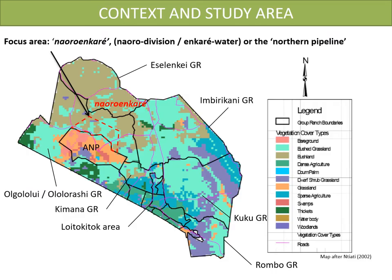The Great Amboseli Ecosystem is a socio-ecosystem located in a semi-arid zone in the south of Kenya. The region experiences bimodal rainfall varying between 250 and 500 mm per year. Precipitation is a key climatic component governing vegetation growth and production, and the abundance, biomass and dynamics of animal populations. The ecosystem, mainly made up of savannas, is considered to be extremely dynamic.